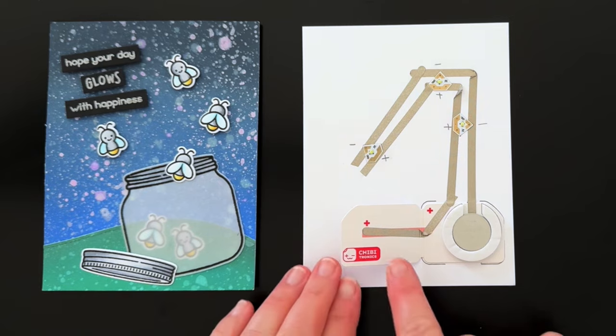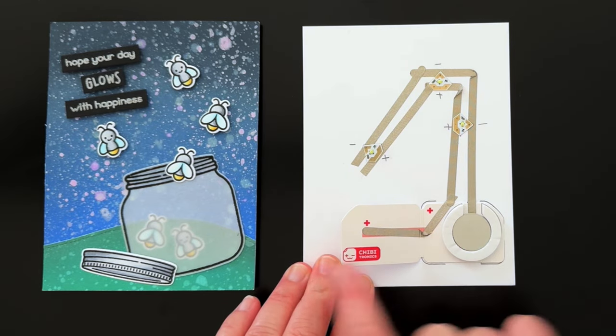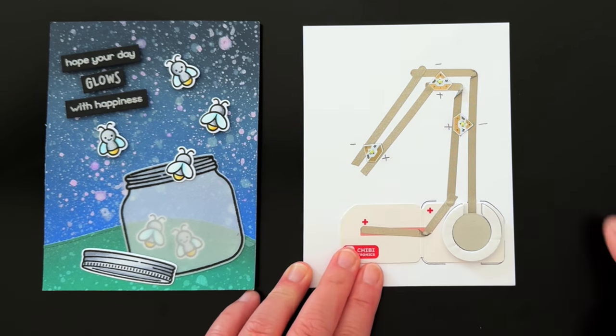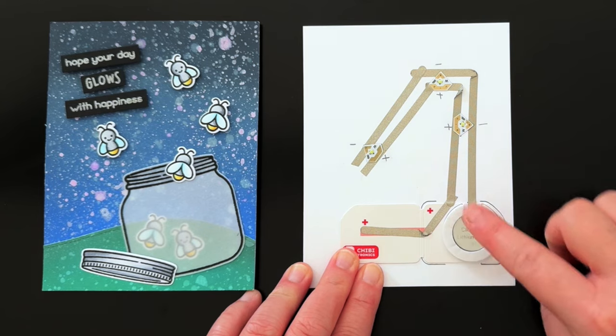Now, nothing's happening because the positive line of tape is not touching the positive side of our battery to complete the circuit. But when we close the flap and push, the positive line of tape touches the positive side of our battery to complete our circuit and our LED stickers start to blink.